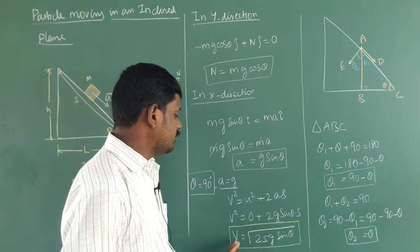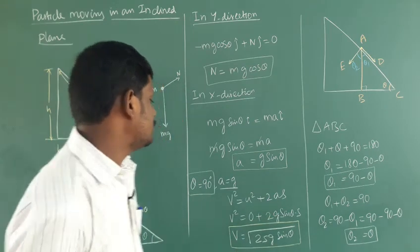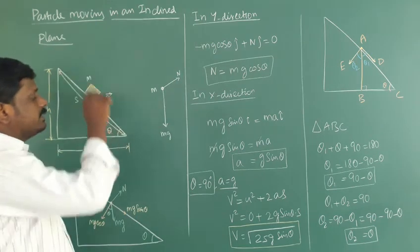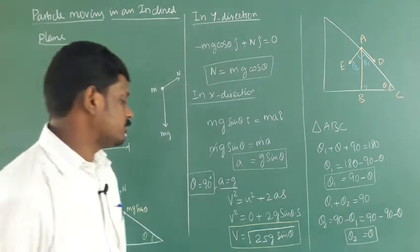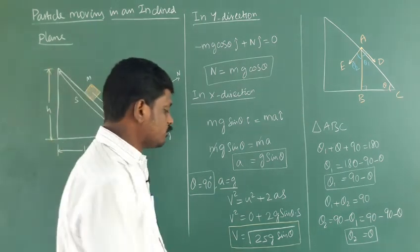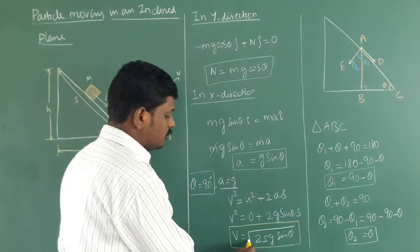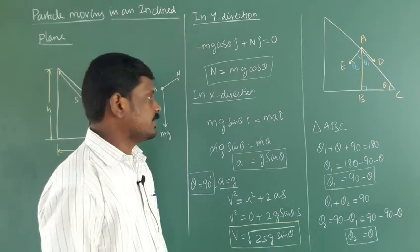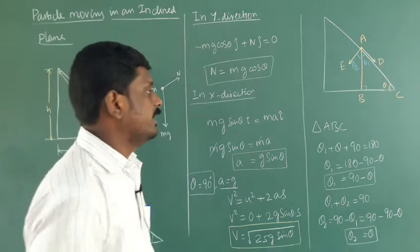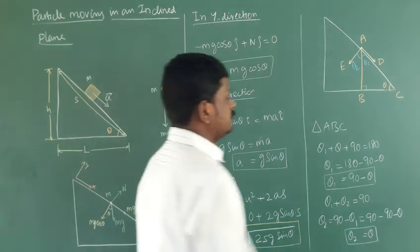The speed when the mass reaches the bottom of the inclined plane is v equal to the square root of 2 g s sine theta.